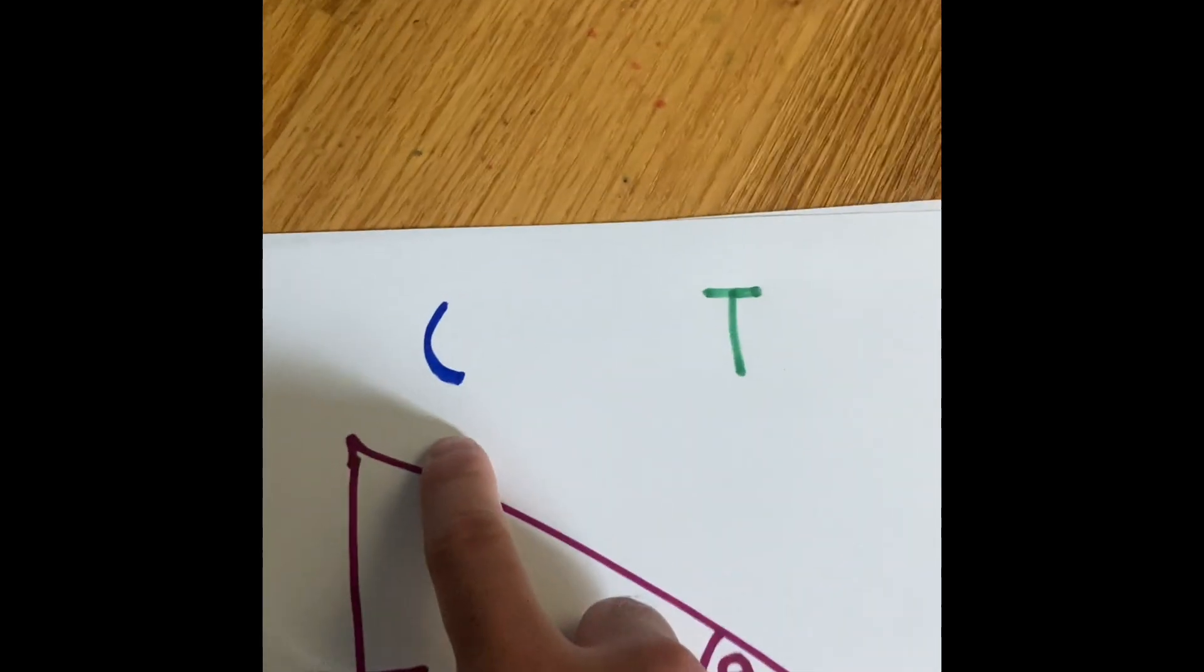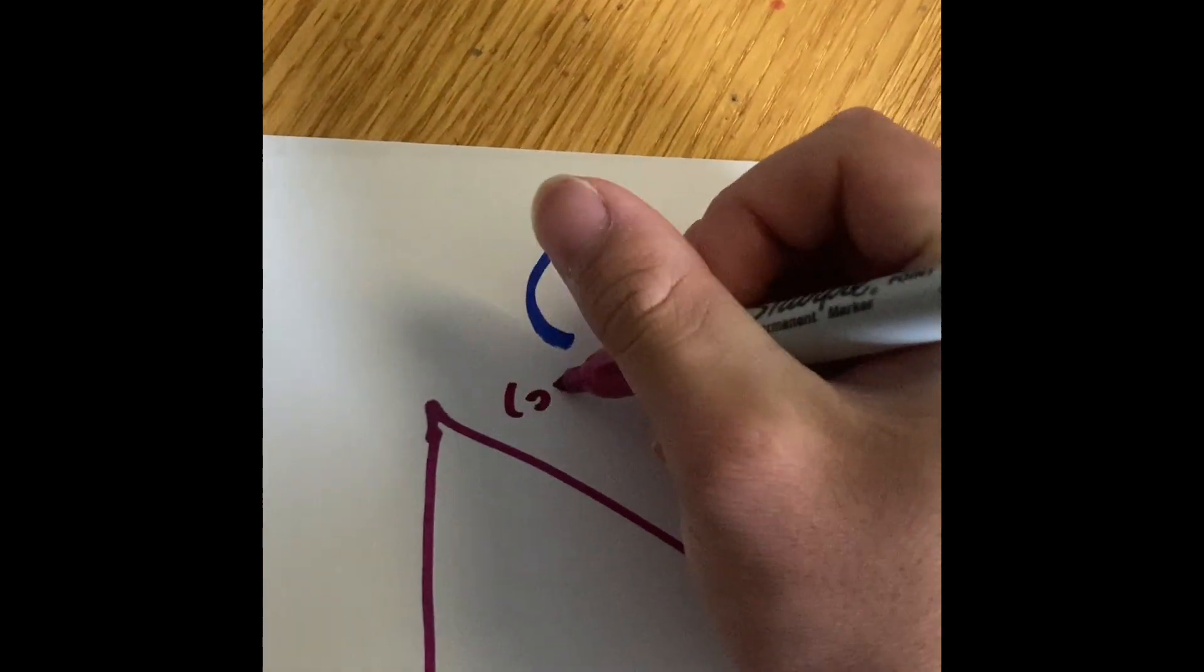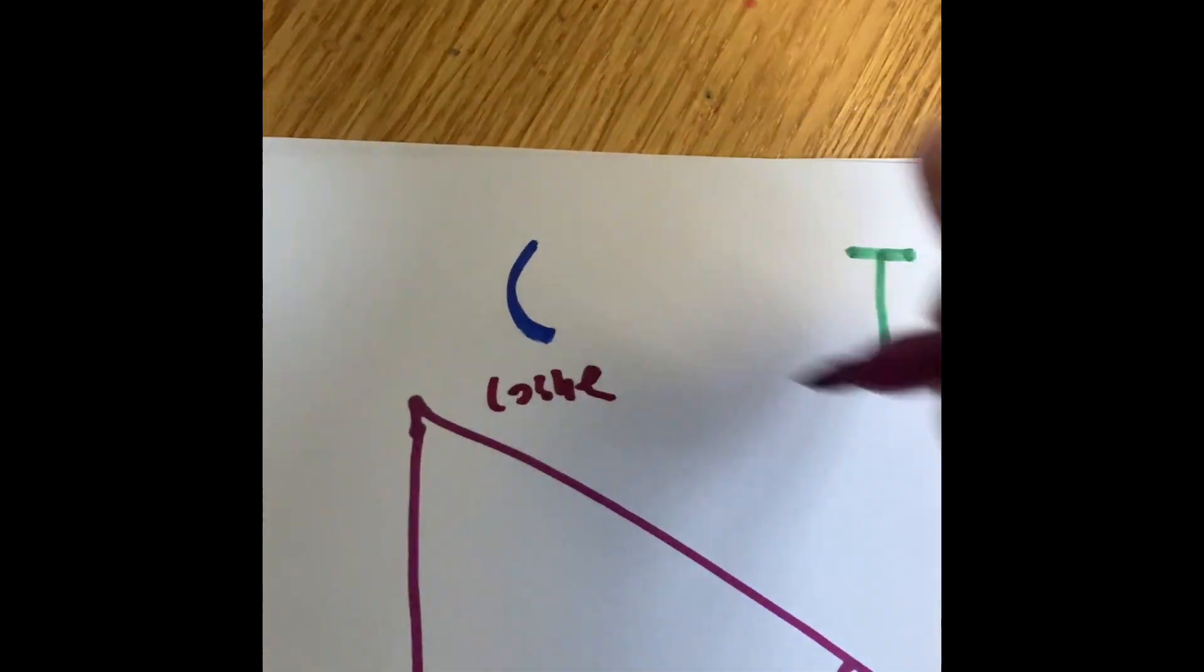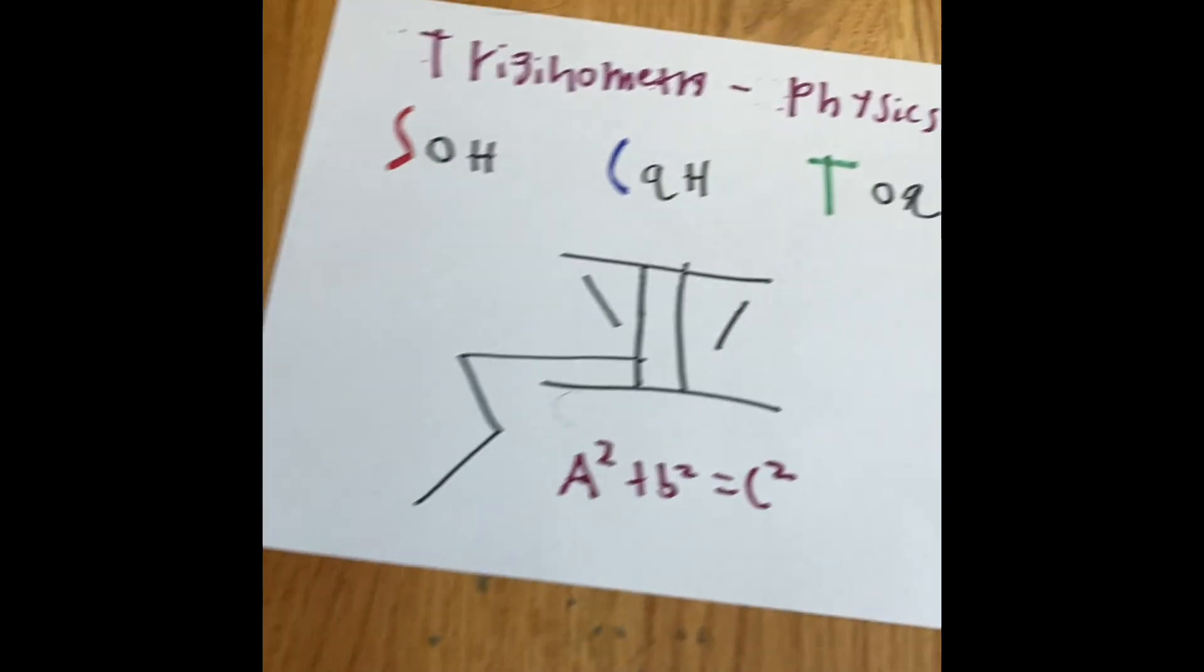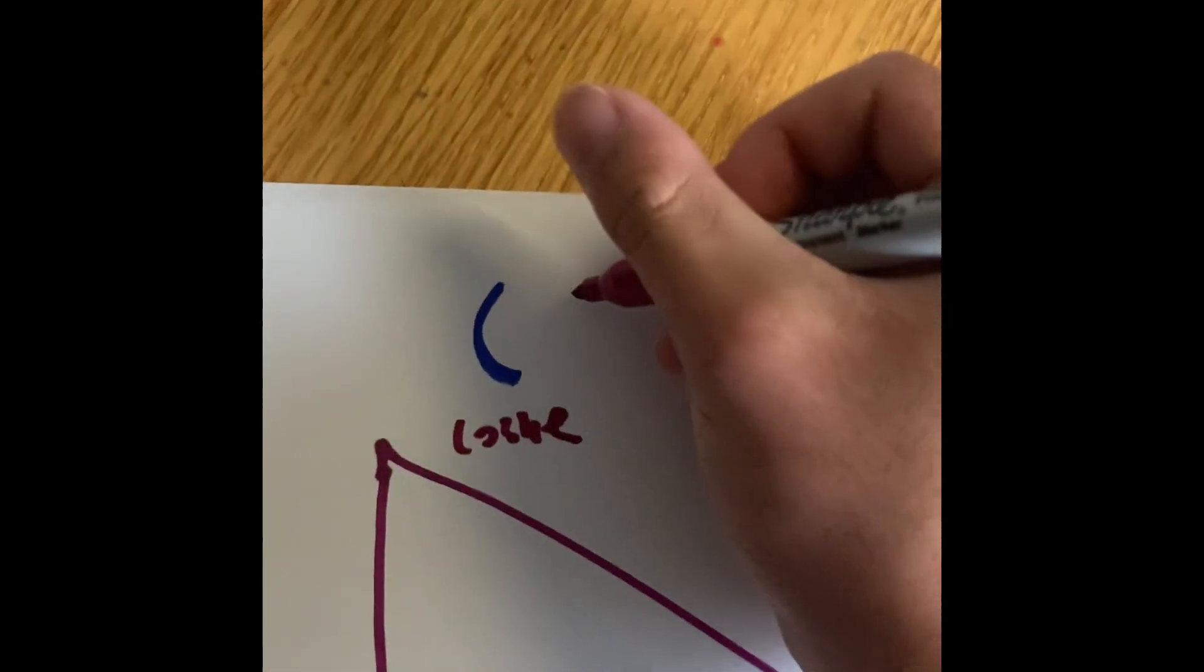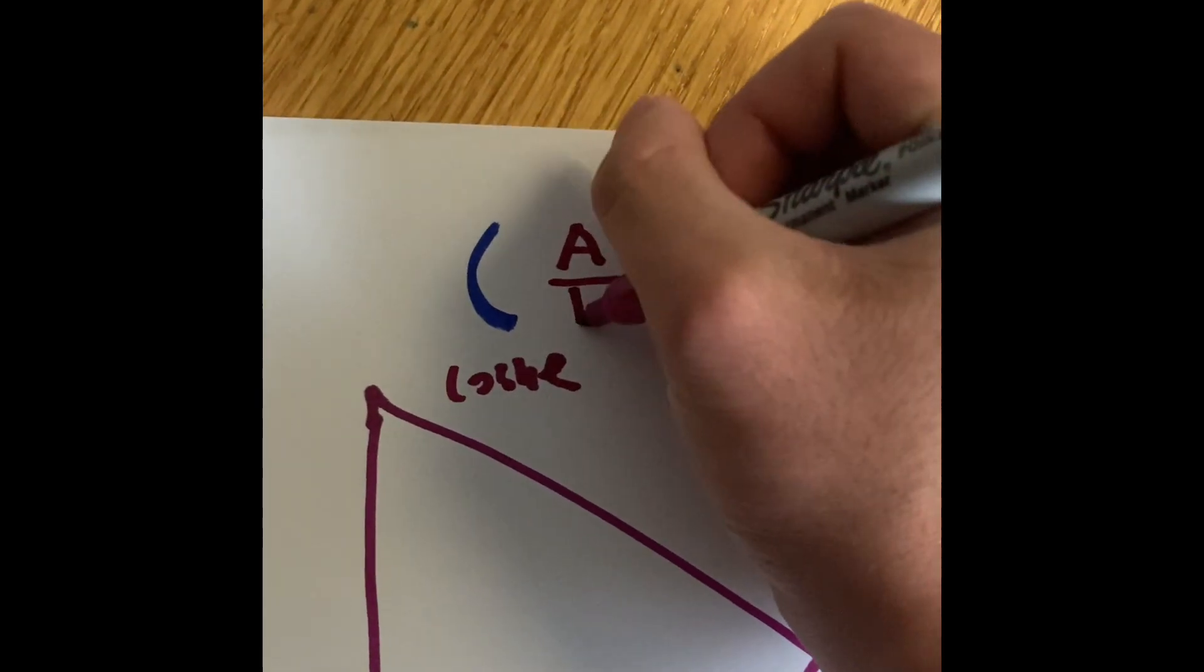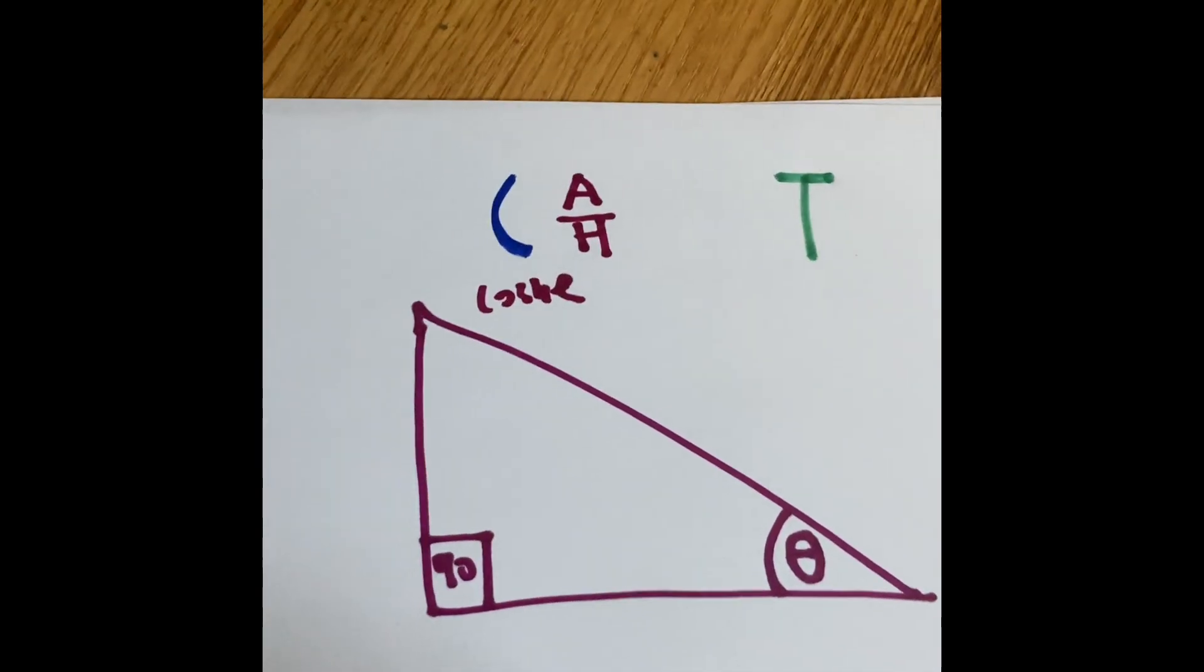The cosine represents the letter C. We're going to write the cosine right there. Instead of opposite divided by hypotenuse, the cosine is adjacent divided by hypotenuse. So we're going to put A divided by H. The relationship between the adjacent and the hypotenuse.